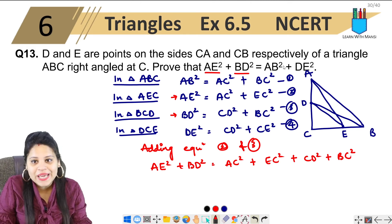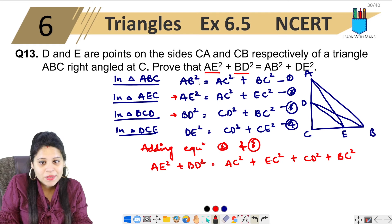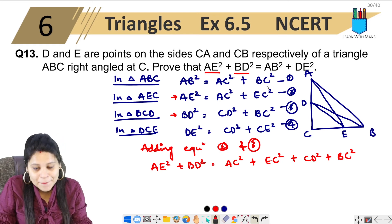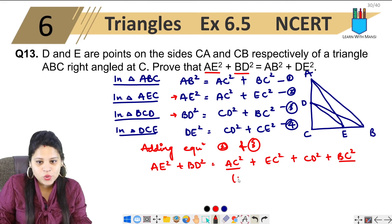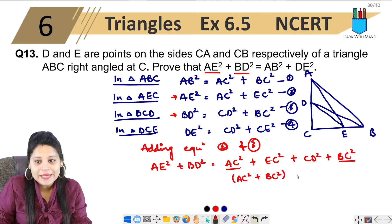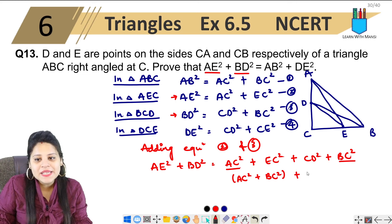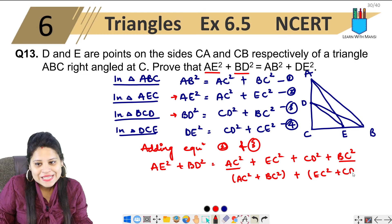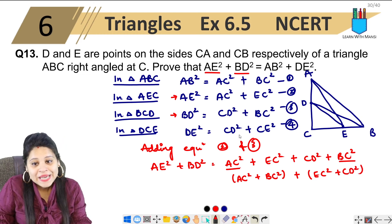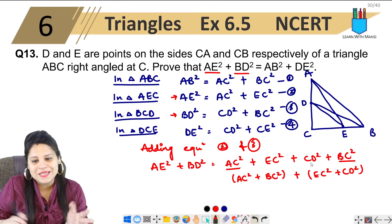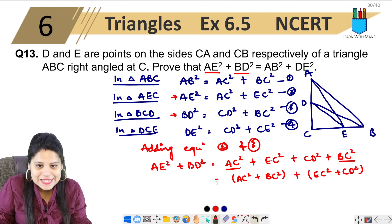So let's see. If I make a pair here, let's talk about AB square. This is AB square. AC and BC square. AC is here, BC is here.